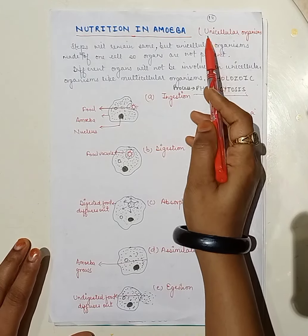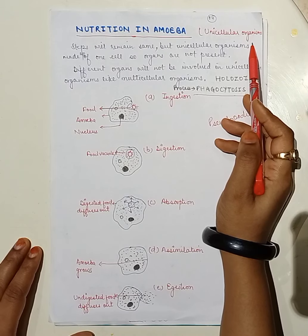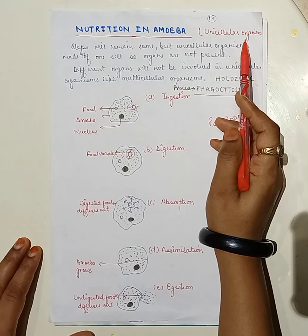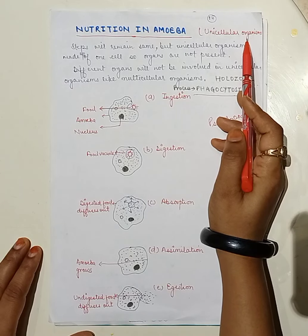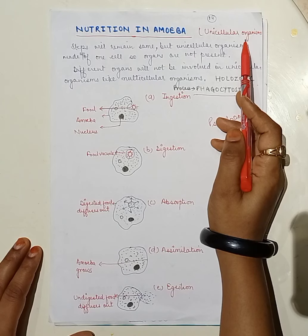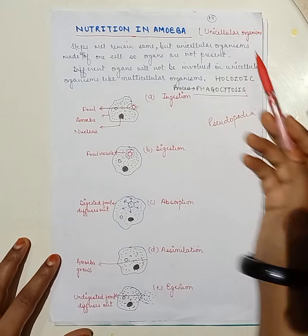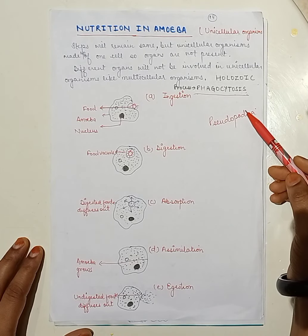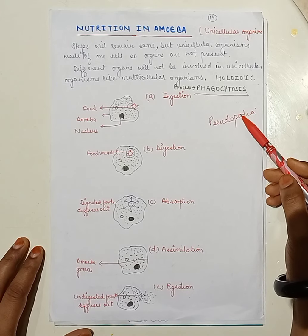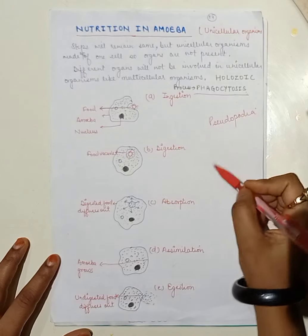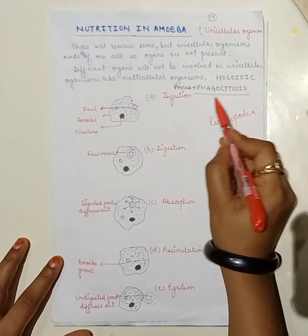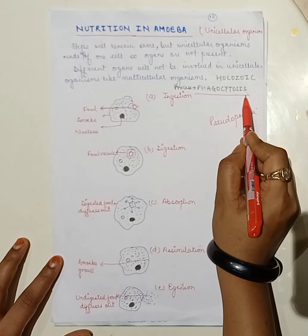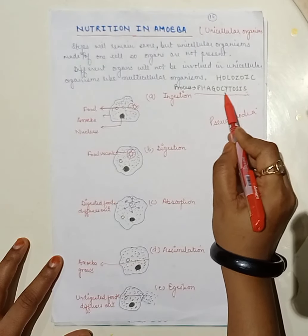The question is: how do all these steps take place in the case of a unicellular organism? Because the unicellular organism consists of only a single cell — their body is not made up of different types of organs or tissues. The simple answer is: through the general body surface, by the process called phagocytosis.